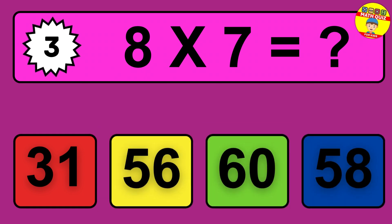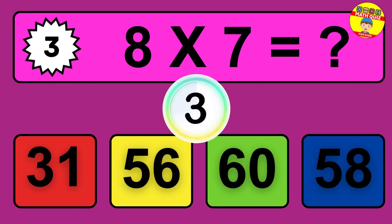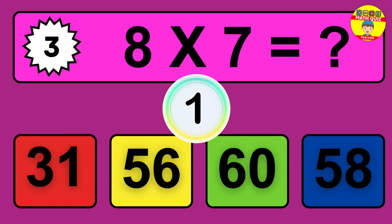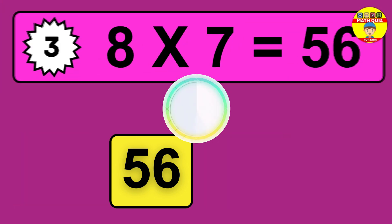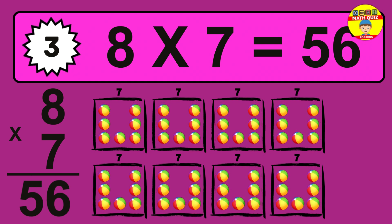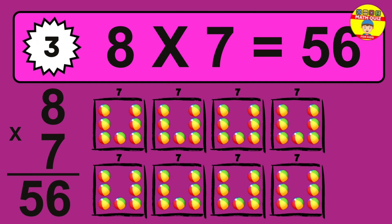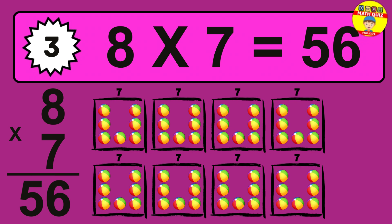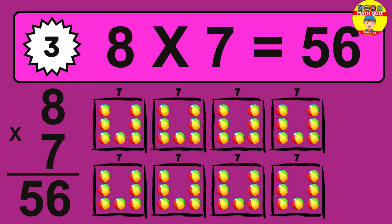Question 3. 8 times 7 equals what? The answer is 8 times 7 is 56. To calculate, we have 8 groups with 7 balls each one. So how many balls do we have? 56 balls.